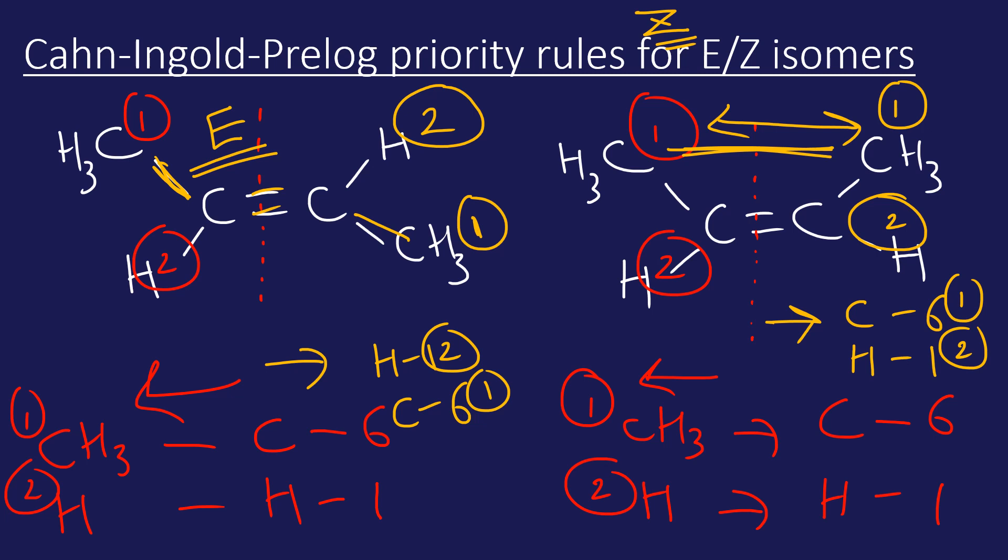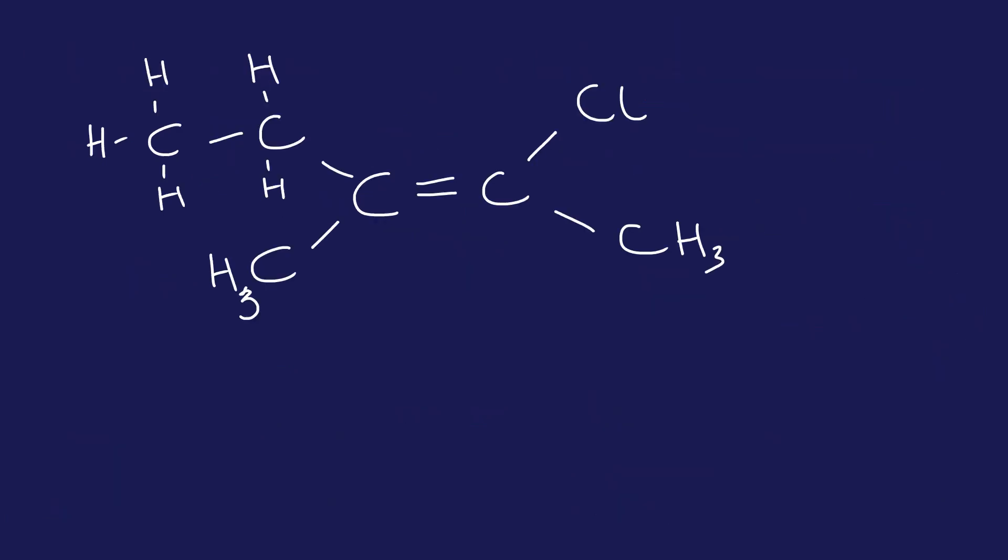Let's look at a slightly more difficult example. Let's talk through the rules again. Let's draw that line through that double bond, and let's just look at the right-hand side to start with. The right-hand side is fairly straightforward - we've got atomic number 6 and atomic number 17. 17 wins hands down, so number one is at the top, number two is down the bottom.